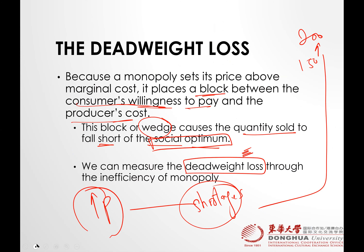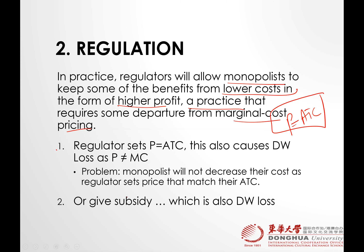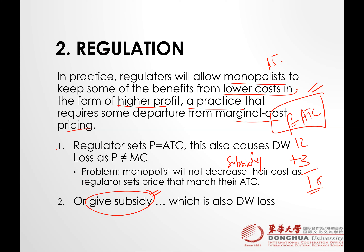The second practical question is: we say to the monopolies that you keep the price equal to average total cost and we are going to give you a subsidy. For example, if the monopoly sets the price at 15 dollars and the government says you charge 12 dollars, we will give you a 3 dollar subsidy. But where will this 3 dollars come from? From taxpayer money — so basically you have spread the deadweight loss to the whole society.